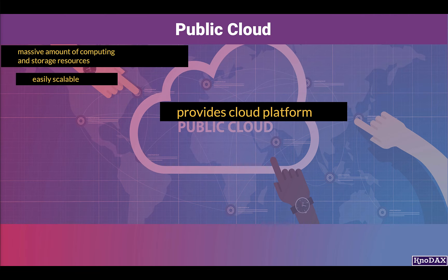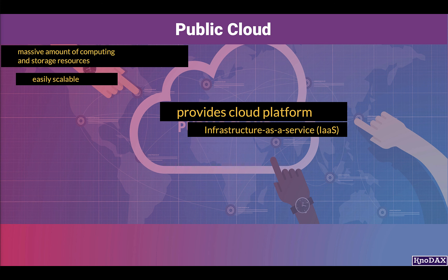For example, public cloud providers provide infrastructure as a service, which means you can launch virtual machines on the cloud, such as a Linux machine, Windows machine, or even a Mac machine, which is possible on Amazon Web Services.